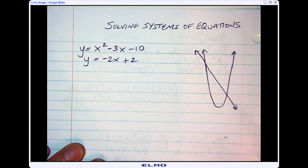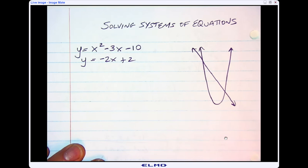So my first example, I have a quadratic and a linear family. If I did a rough sketch, this parabola would look like this, and this would be a decreasing line.